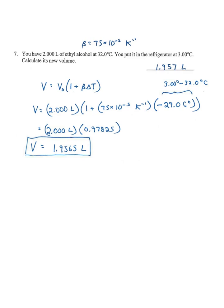Number seven: Two liters of ethyl alcohol at 32 degrees Celsius, put in the refrigerator, goes down to 3 degrees Celsius. Calculate its new volume. It's a liquid, so we're going to do volume expansion of a liquid. Actually, since the temperature is going down, it's going to be volume contraction. We'll use this formula: V = V0(1 + βΔT).